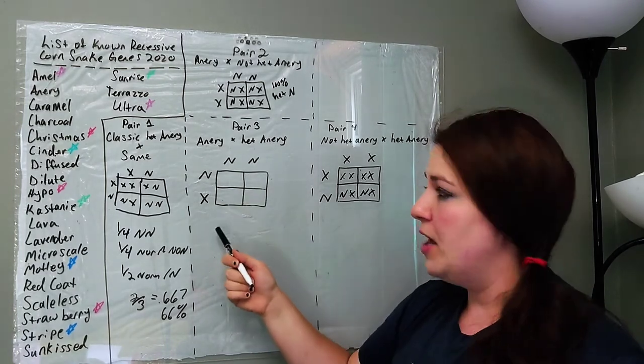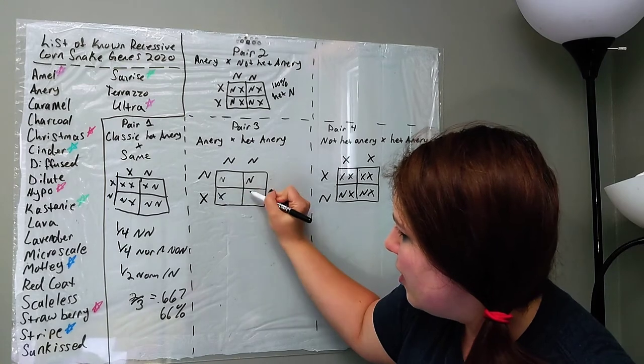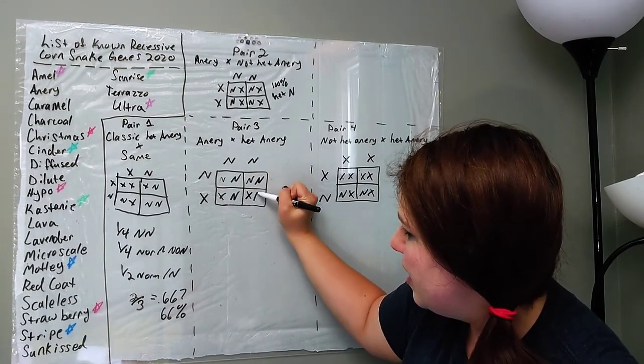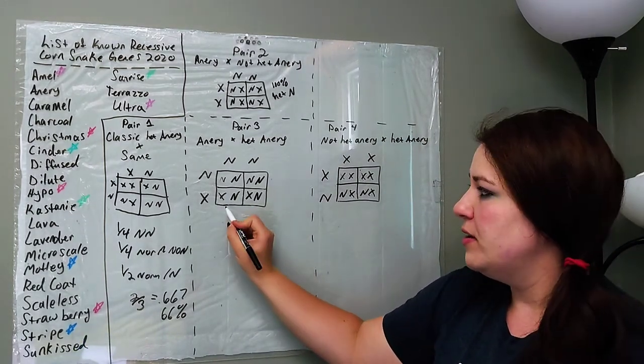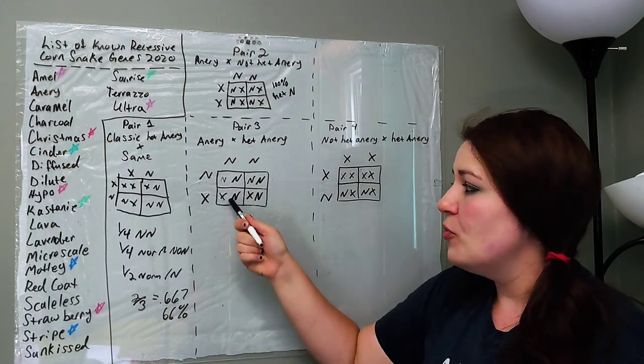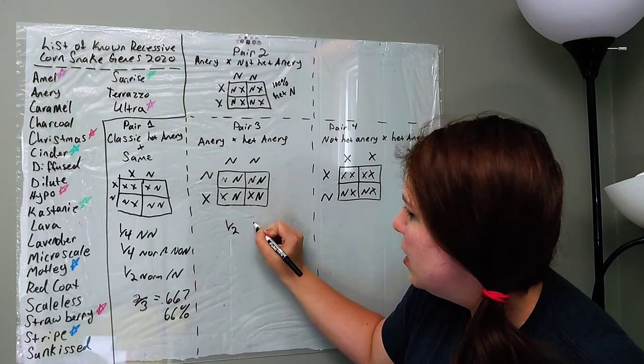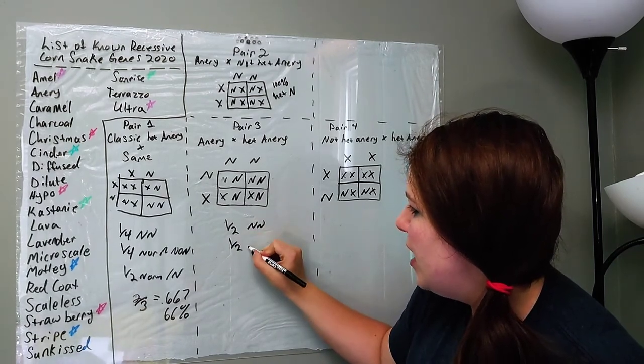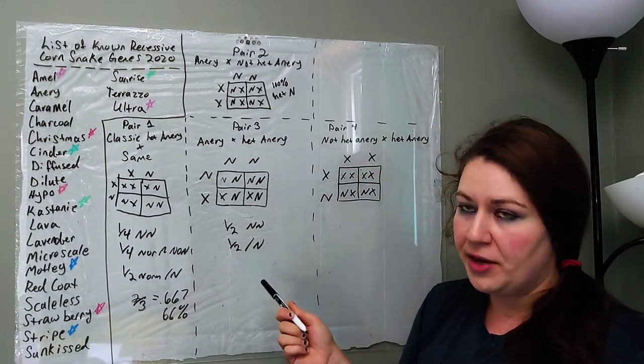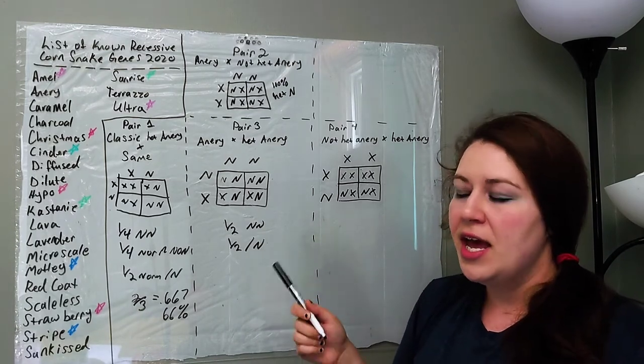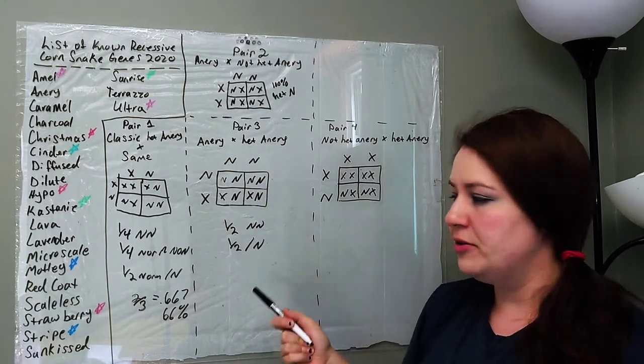Alright, we'll go ahead and do the anery to a het anery next in our pair 3, so again I'm going to go ahead and put the AN across, and the X across, and then the AN down, and this AN down. So here you will see that we have half visual aneries and half normals that are het anery. And again, these are 100% het anery because they had a visual anery parent. So one half anery and one half het anery. I'm just going to put my slash there. This just means, like I said, all of these normals, all of these non-aneries are 100% het for anery. And you can make a Punnett square like this, and you can say, yep, all of the ones that are not homozygous anery are heterozygous anery.